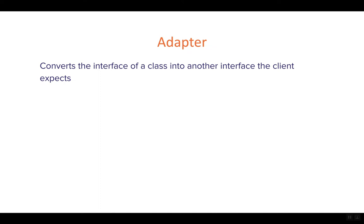The adapter converts the interface of a class into another interface that the client expects. You can think about it as having two different sets of classes that both have a certain interface. By interface, we can mean the explicit interface component of the class, or simply the methods that are available. If you want to formalize it, you create interfaces; if not, you don't necessarily need the interface. So basically, it converts an interface into another interface — that is the adapter.